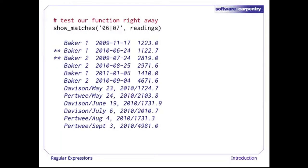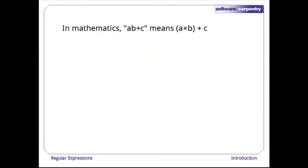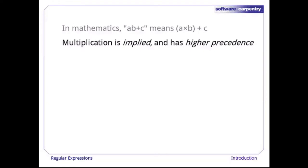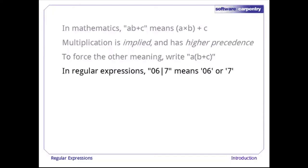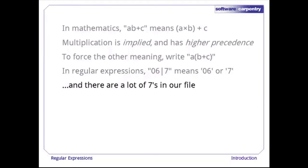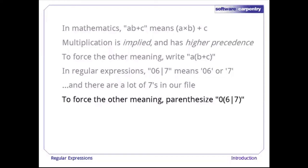We've got stars beside the two records with month 06 or 07. But if we match '06|07', it seems to be matching a lot of things that don't have month 06 or 07. Think back to mathematics: AB+C means A times B plus C, and multiplication has higher precedence. The same thing happens with regular expressions — '06|7' means either '06' or the digit '7'. If we want to match '06' or '07', we can parenthesize as shown: '(06|07)'.